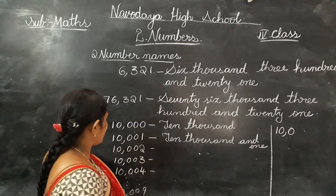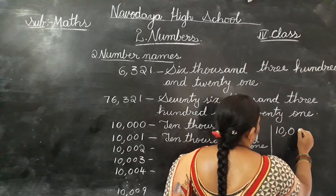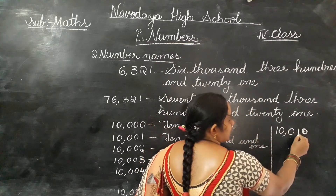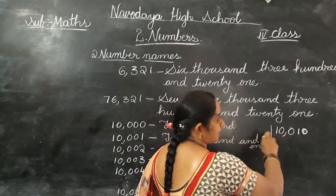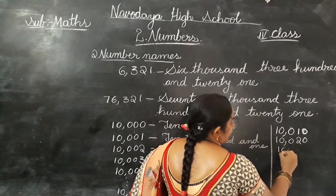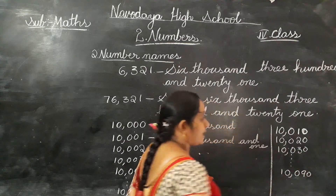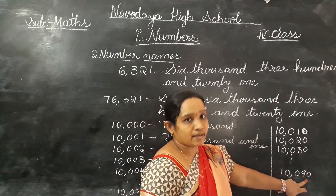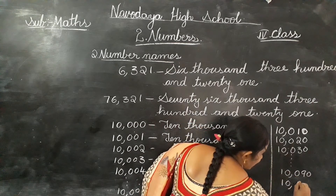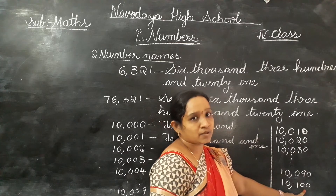Ten thousand and ten — ten has two digits, so the ones place is zero and the tens place is one. Up to ten thousand and twenty, ten thousand and thirty, up to ten thousand and ninety. After ten thousand and ninety comes ten thousand and one hundred, because ninety is followed by hundred, which is a three digit number. So hundreds place has one and the remaining tens and ones places are zero — ten thousand and one hundred.